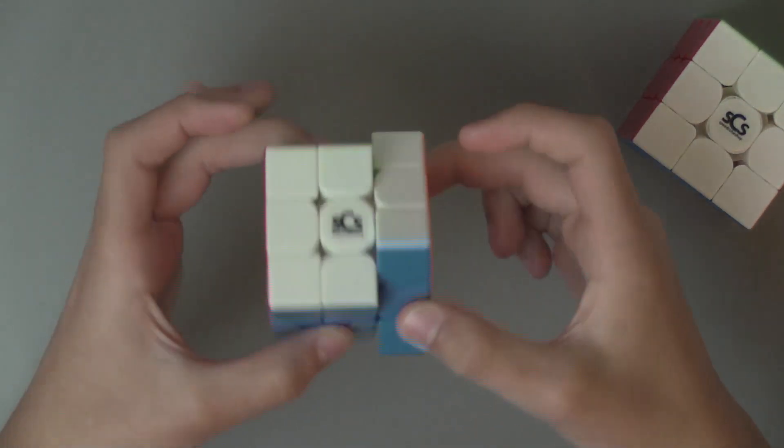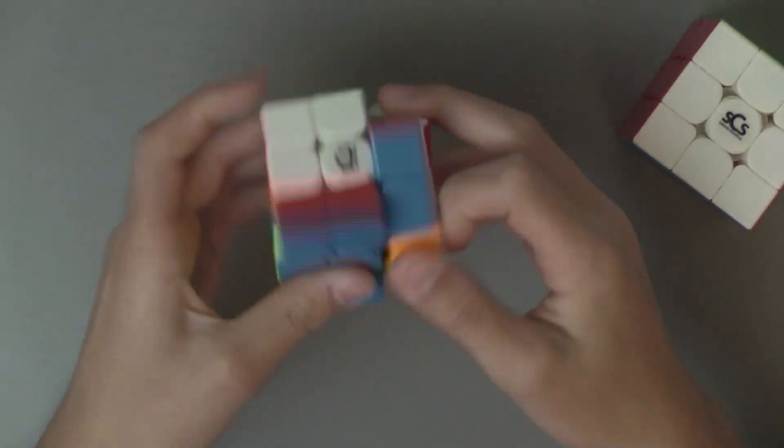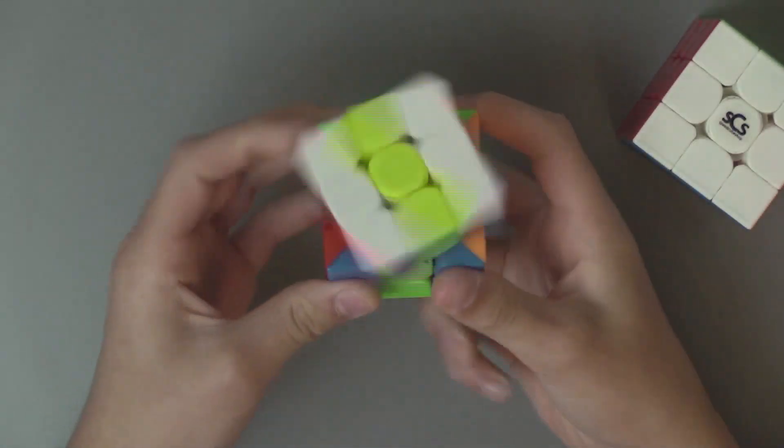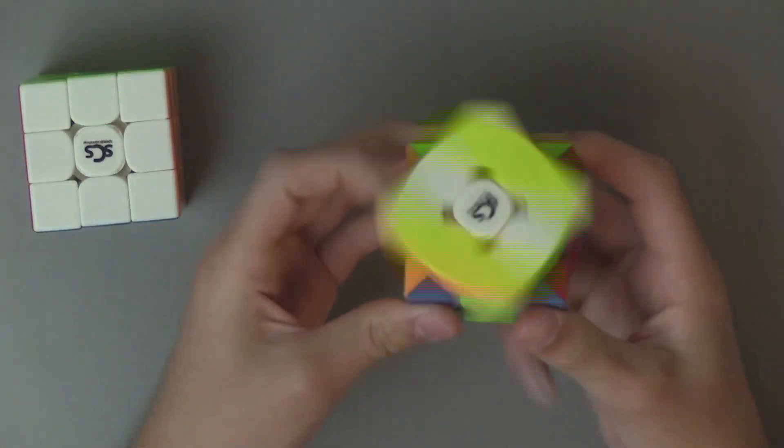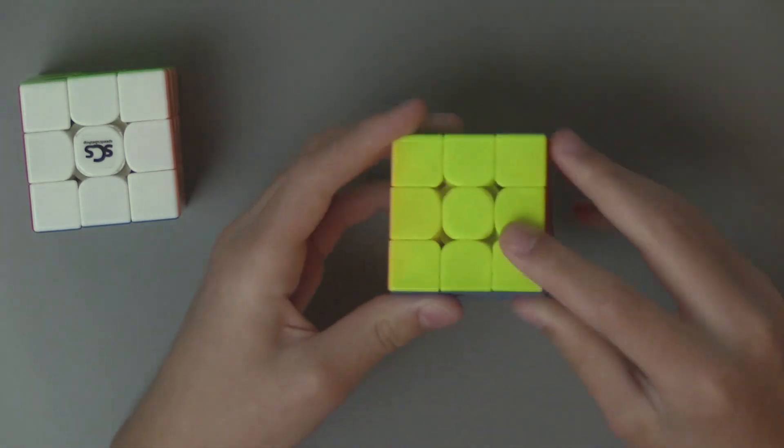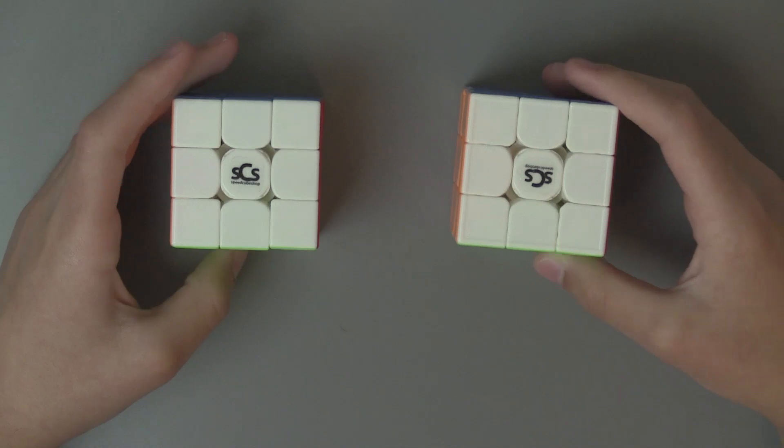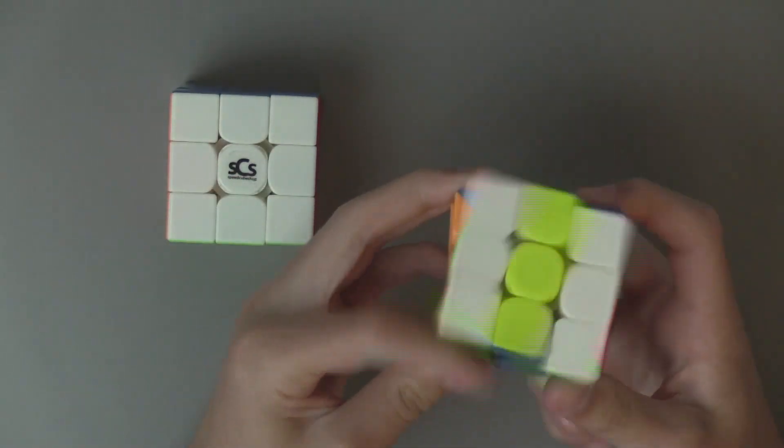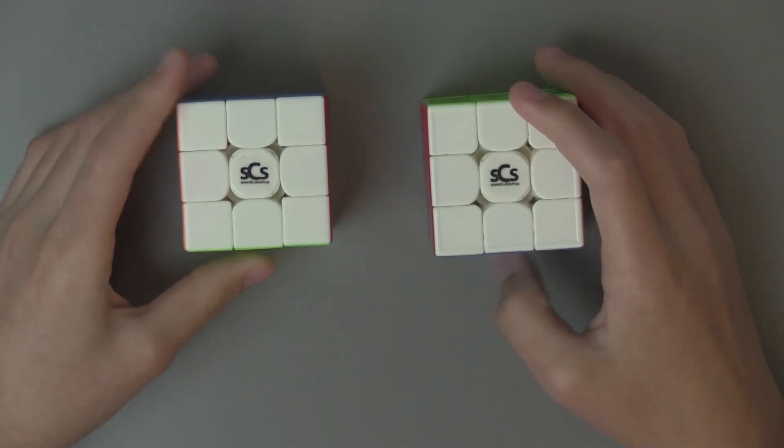But then for the WRM, the magnets are almost unnoticeable. Like, when you're testing, you can feel them. When you're doing algorithms, you can barely tell. So I think that the magnet strength of the WRM is light, and then the GTS-3M is strong.